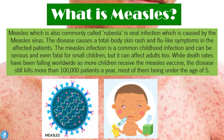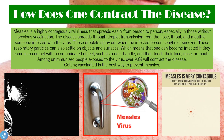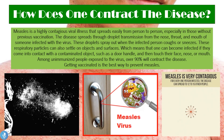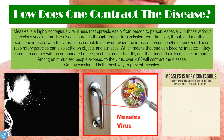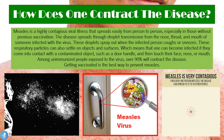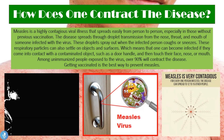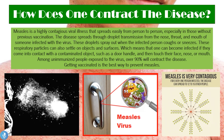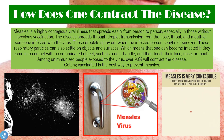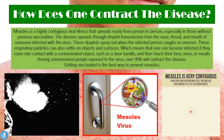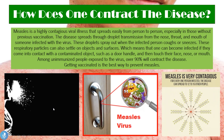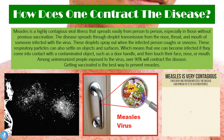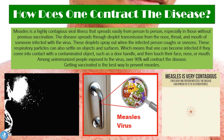Measles is a highly contagious viral illness that spreads easily from person to person, especially in those without previous vaccination. The disease spreads through droplet transmission from the nose, throat, and mouth of someone infected with the virus. These droplets spray out when the infected person coughs or sneezes, and can be inhaled by someone standing close or land on various surfaces, allowing the virus to spread quite easily.